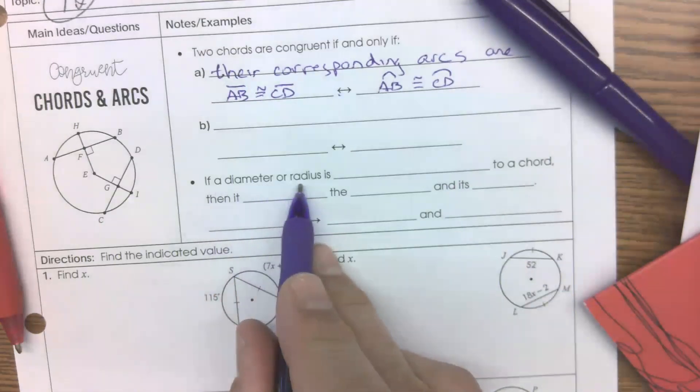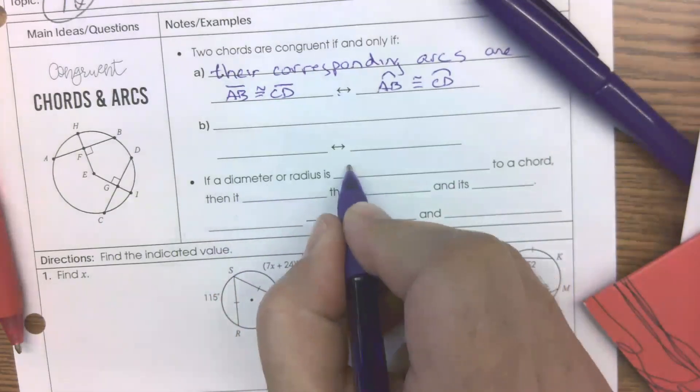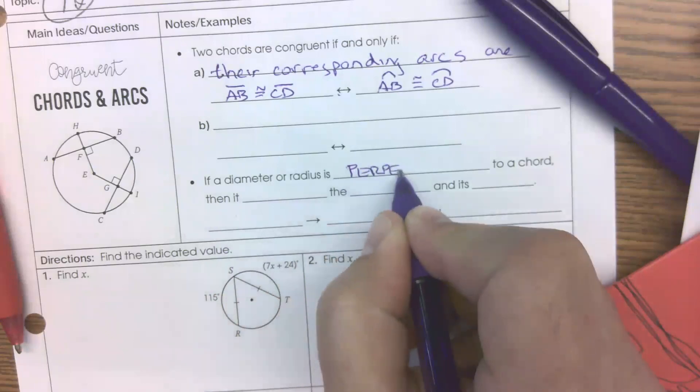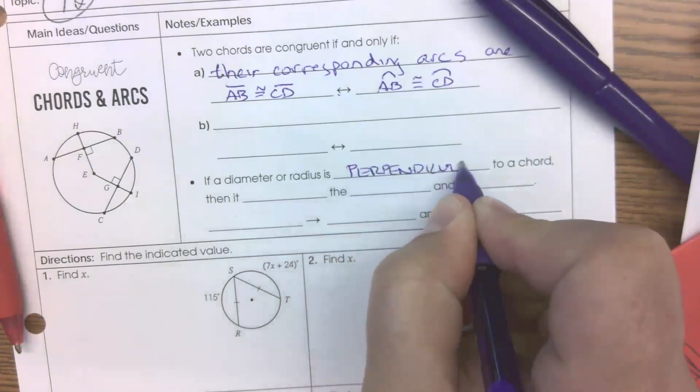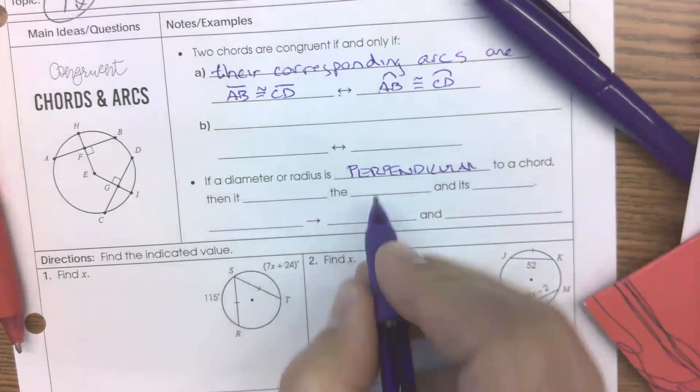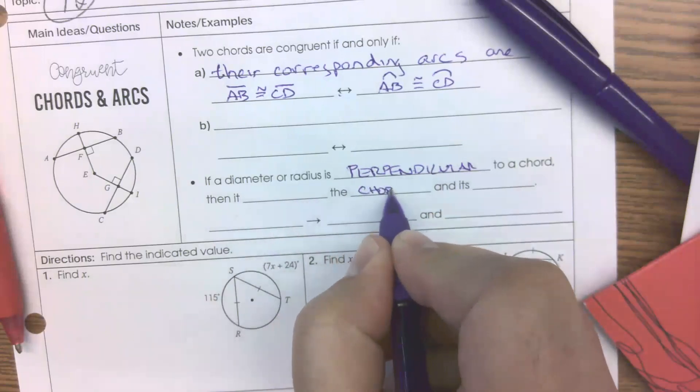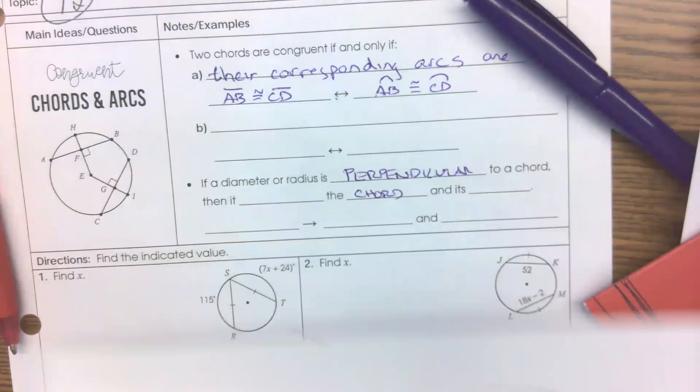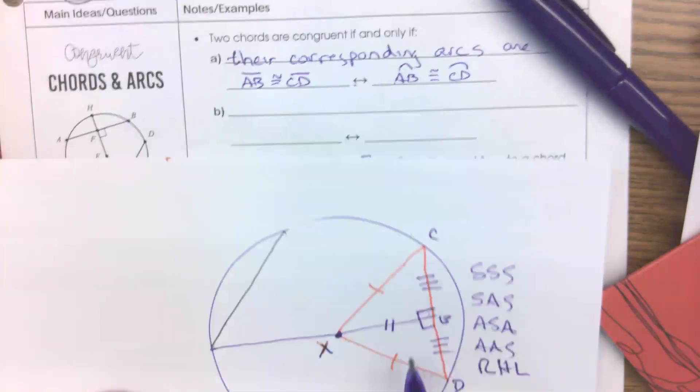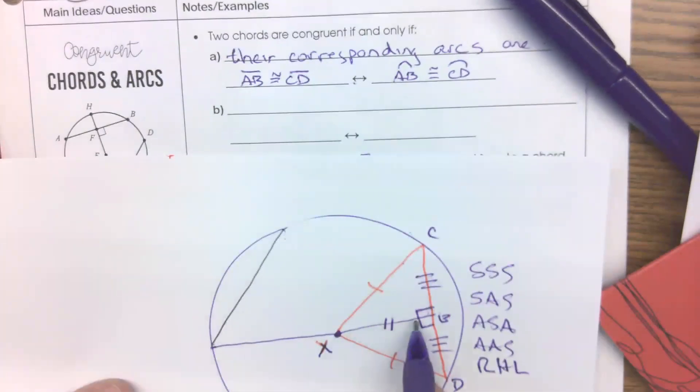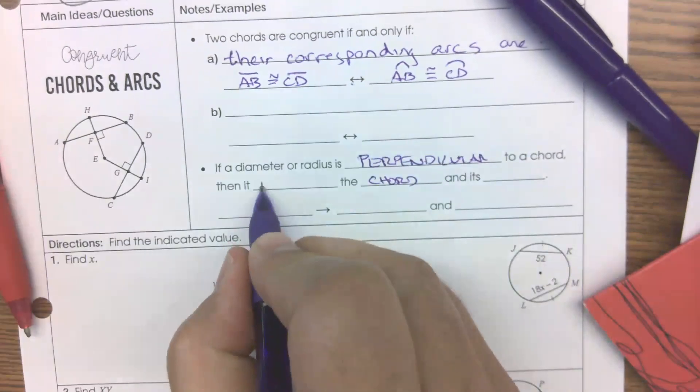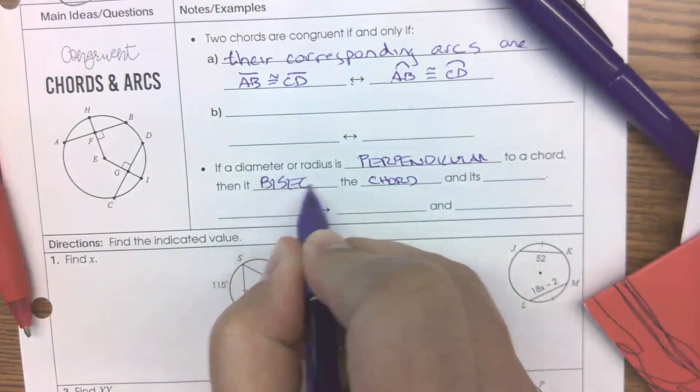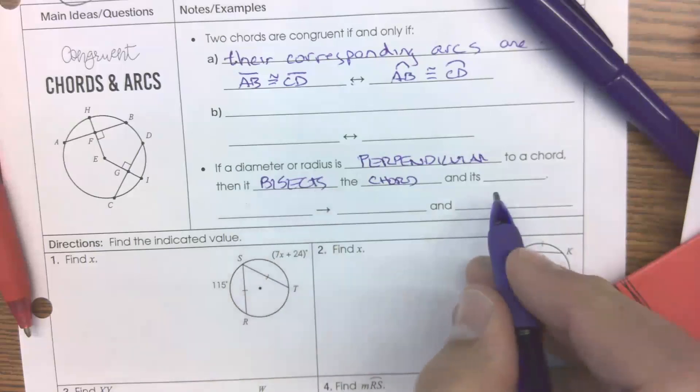In other words, let's go to C here. If a diameter or a radius is perpendicular to a chord, then it does what to the chord? What do we do with this picture? What did this diameter or radius that's perpendicular do to this chord? Bisects, good. Then it bisects the chord.